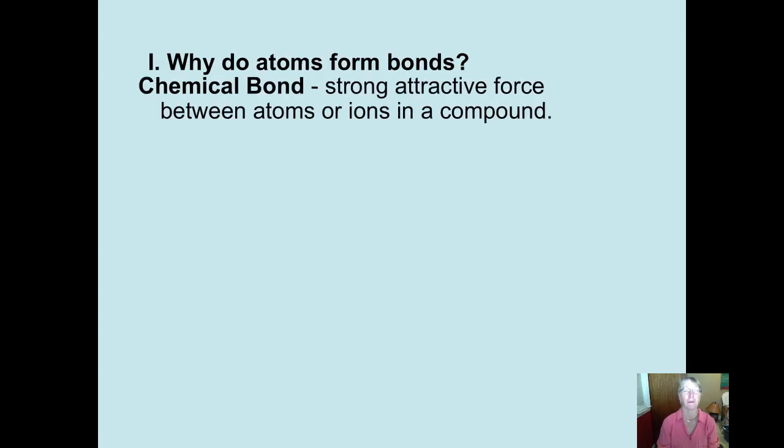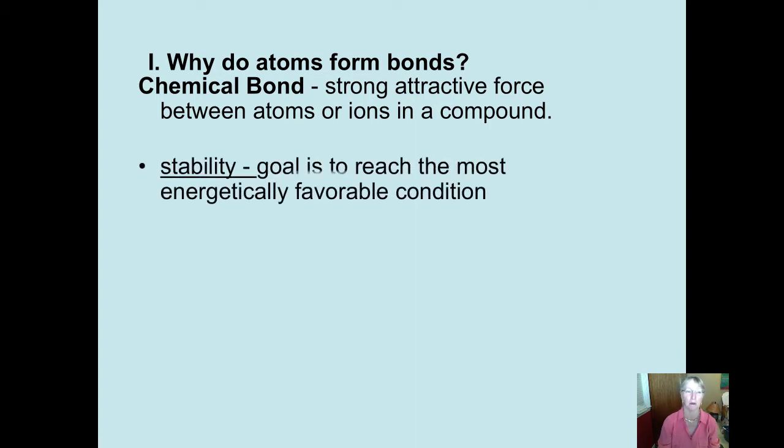Why do atoms form bonds? Well, let's first define what a chemical bond is. It's a strong, attractive force between atoms or ions in a compound. Now, we're going to focus on ionic compounds in this chapter and covalent compounds in the next chapter. But let's take a look at how one can reach that stability goal.